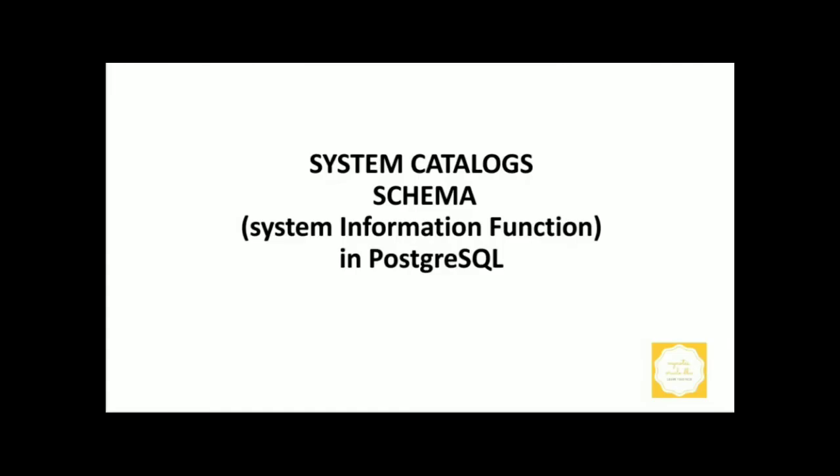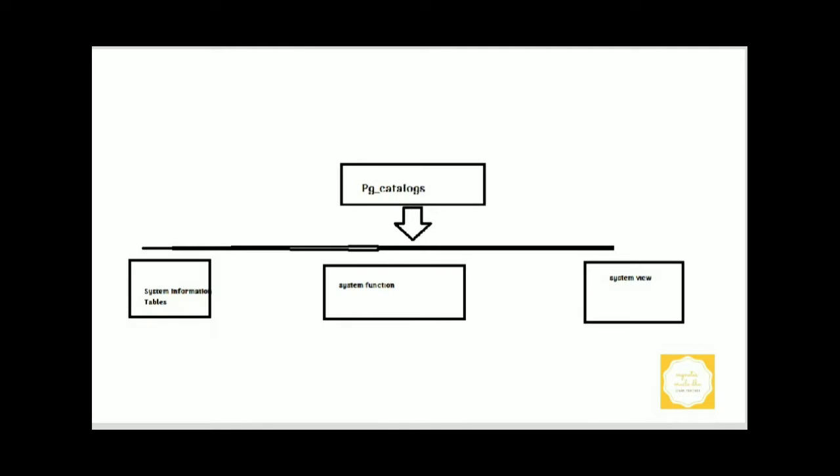Welcome to my Notes Oracle DBI YouTube channel. Today we are going to discuss system information functions in PostgreSQL. The PostgreSQL system automatically creates and maintains the schema pg_catalog in each database. This schema contains system information tables, system functions, and system views.